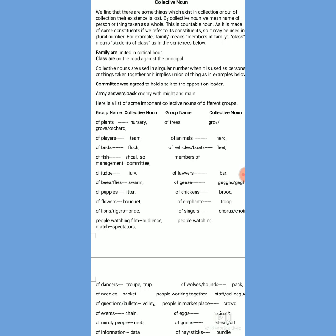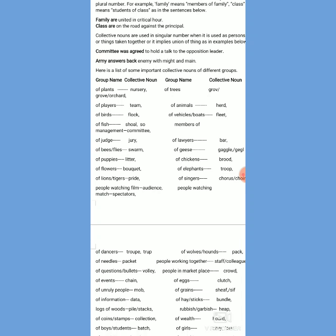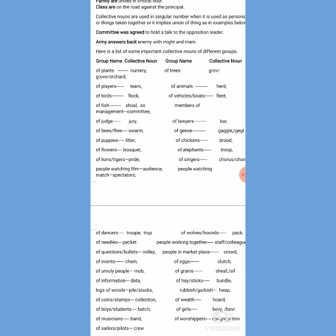For the collection of many players we have the collective noun 'team.' Likewise, the collection of many animals together is known as 'herd,' and a collection of many birds flying somewhere is known as 'flock.' Similarly, we have many kinds of boats or vehicles at one place — the collective noun for collection of vehicles and collection of boats is 'fleet,' and for collection of fish we have the collective noun 'shoal' (S-H-O-A-L).